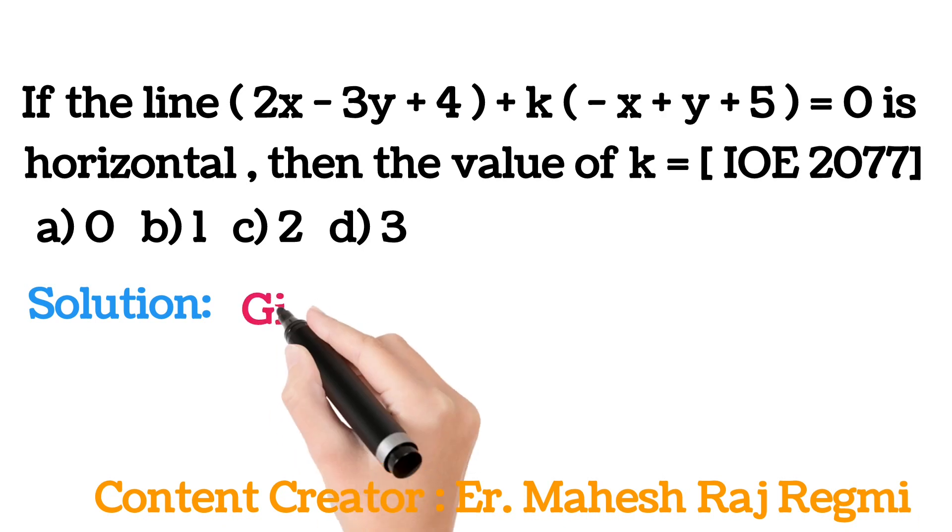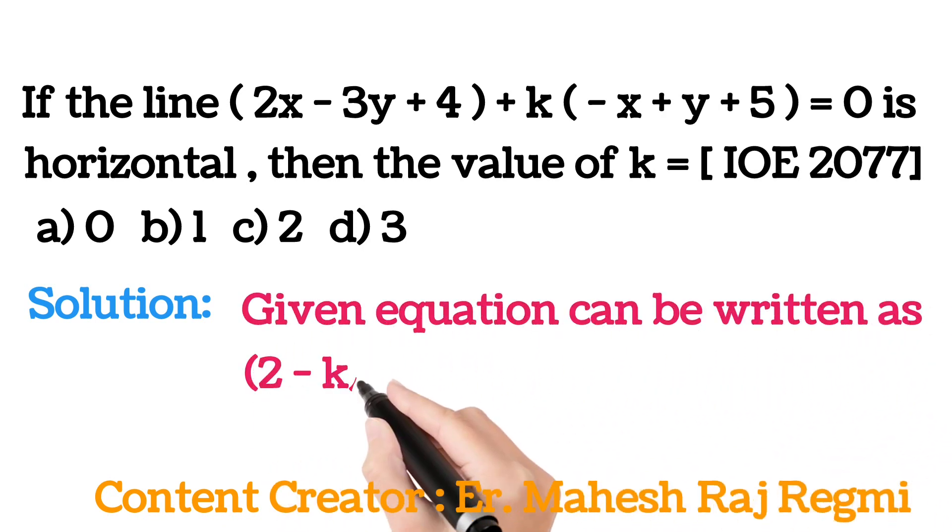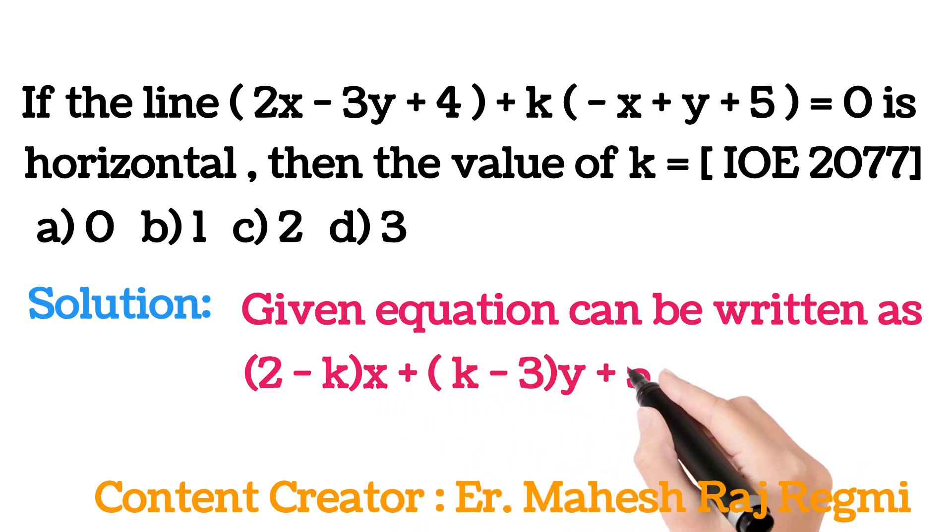Simply by opening bracket and grouping, given equation can be written as 2 minus k x plus k minus 3y plus 5k plus 4 equals 0.